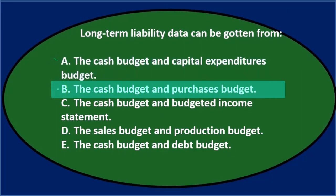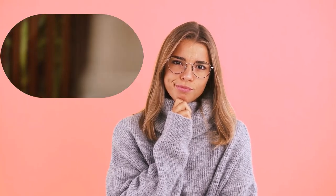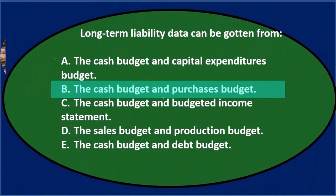Option B says the cash budget and purchases budget. Cash could certainly be involved, but the purchases budget usually refers to purchases of merchandise, which would go to accounts payable rather than long-term liability. So B is less likely, but we'll keep it for now.